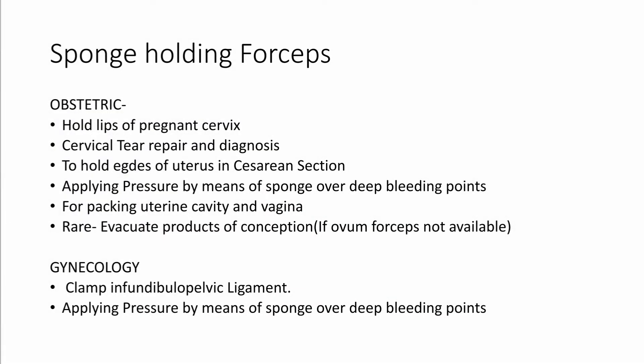The uses of the sponge holding forceps in obstetrics are to hold the lips of a pregnant cervix, for cervical tear repair. In caesarean section you can hold the edges of the uterus, applying pressure by means of a sponge over a deep bleeding point, or to evacuate the products of conception. Though we rarely use it — we most commonly use the ovum forceps — and in gynae you can use it to clamp the infundibulopelvic ligament.